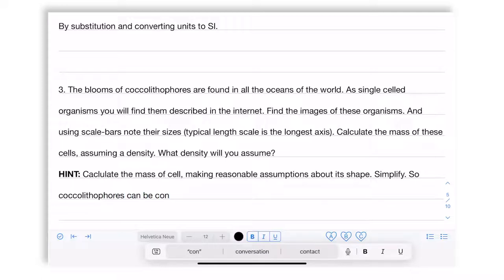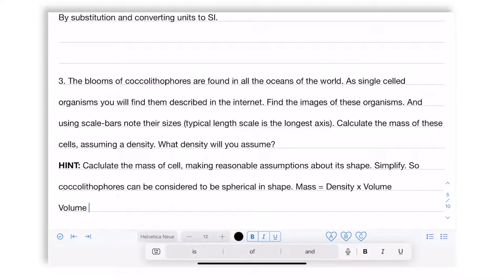If you recall, I had mentioned in the earlier lectures also that a physics approach means that we simplify. So coccolithophores can be considered to be spherical in shape. The mass therefore is equal to the density multiplied by the volume. Since density is mass per unit volume, we basically get the mass of the coccolithophore for which you need to get the volume. And for volume, we calculate the volume of a sphere. For that, the characteristic number you need to know is the radius. This you will capture from the images on the internet.